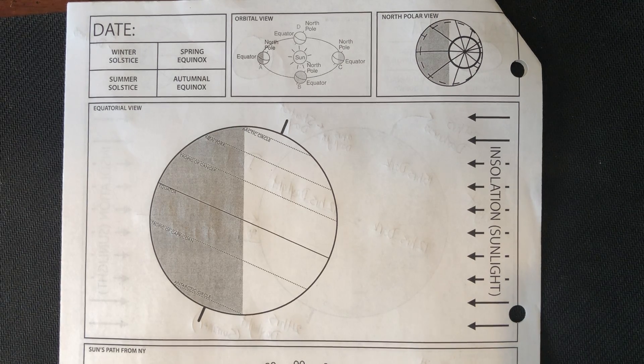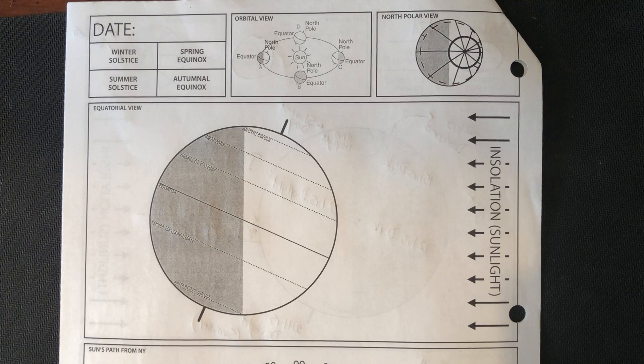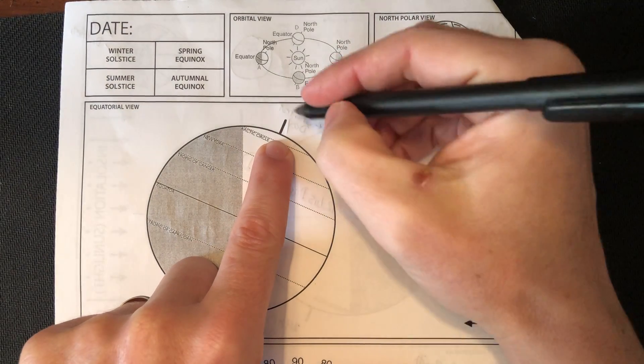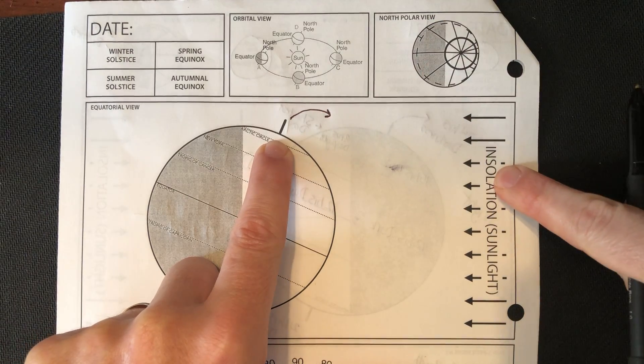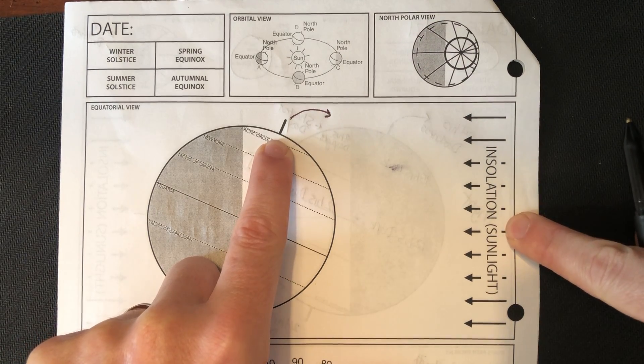If you watched my previous video on how to determine winter, it's all about looking at that northern axis. If that northern axis is tilted towards the sun now, towards the insolation, now it's going to be summertime.